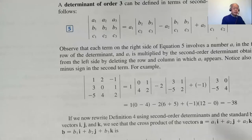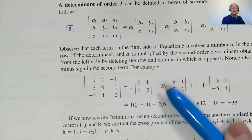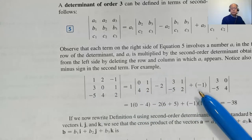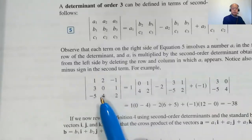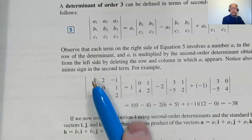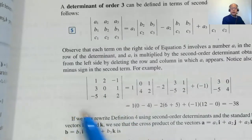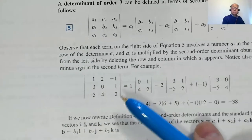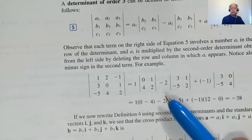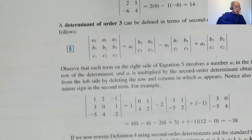Here's an example: evaluate the determinant with top row 1, 2, -1. Extract the top row, keeping the sign of 1, changing the sign of 2, keeping the sign of -1. The 2×2 minor for 1 is [0,1; 4,2], for 2 is [3,1; -5,2], and for -1 is [3,0; -5,4]. That becomes 1(0-4) minus 2(6-(-5)) plus (-1)(12-0), which comes out to be -38.